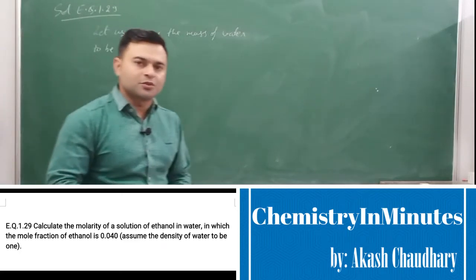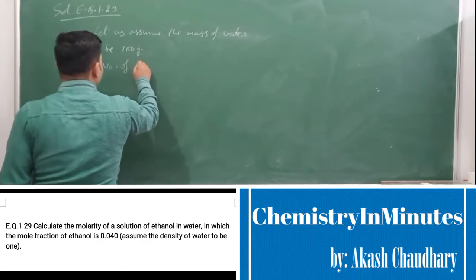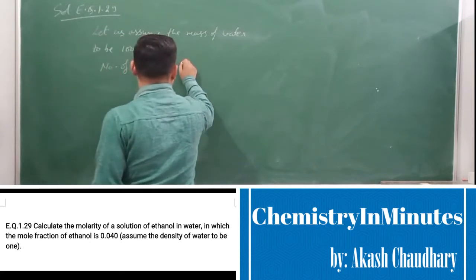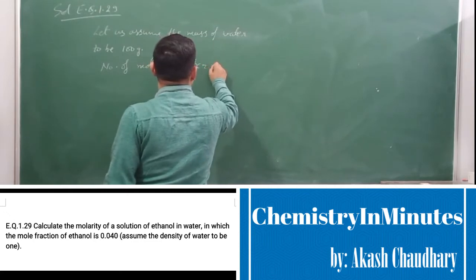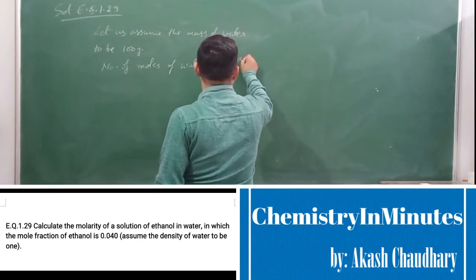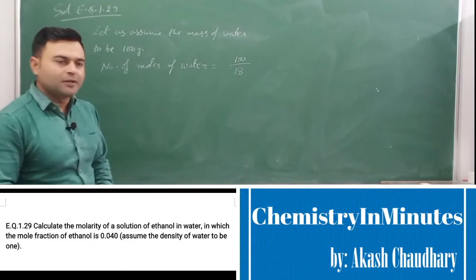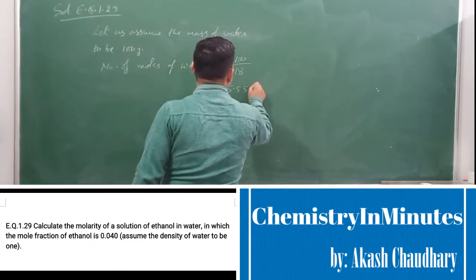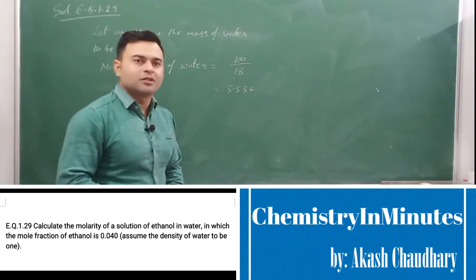Now, we will find the number of moles of water. Number of moles of water equals given mass divided by molar mass — that is 100 grams divided by 18 grams per mole — which comes to 5.556 moles. So we have the moles of water.